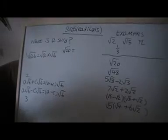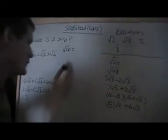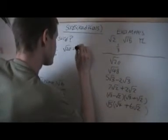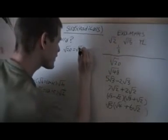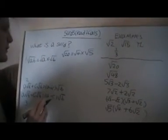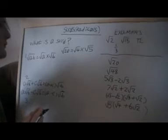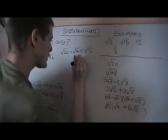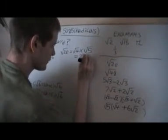And that's four. And five of them go into 20. So I'll rewrite that as root 4 times root 5. The square root of 4 is 2. So then I can write that as 2 root 5.